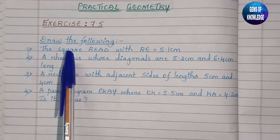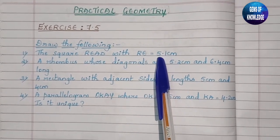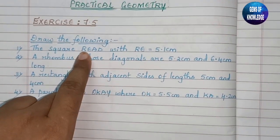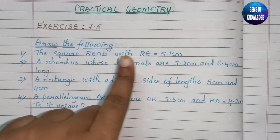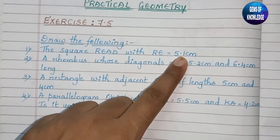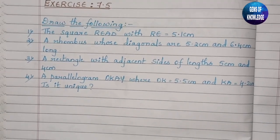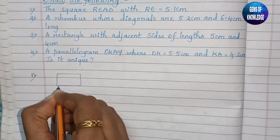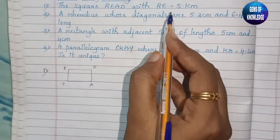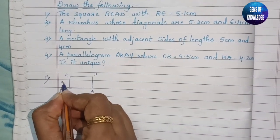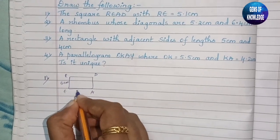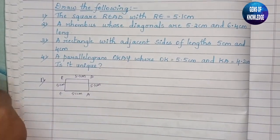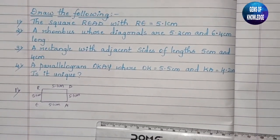The first question is to draw a square READ where RE equals 5.1 centimeters. Only one measurement is given — RE equals 5.1 centimeters. Since READ is a square, if one side is 5.1 centimeters, then all four sides will be equal. Let us draw a rough diagram. This is the square READ, and RE equals 5.1 centimeters, so all four sides will have the same measurement.